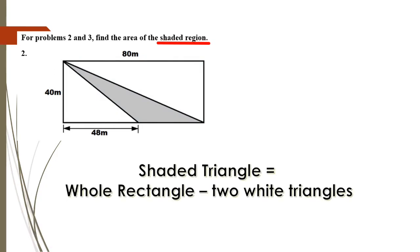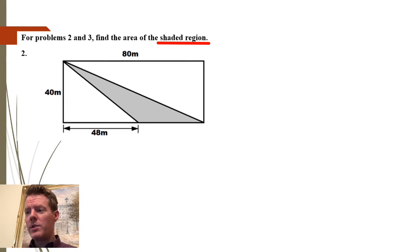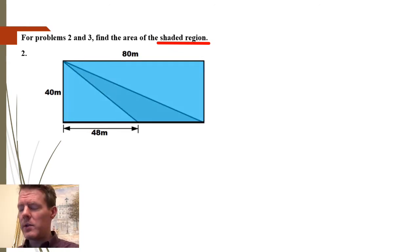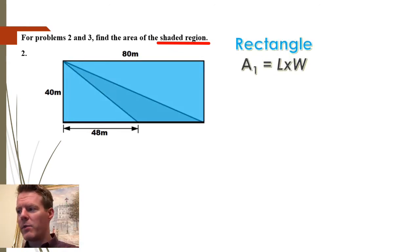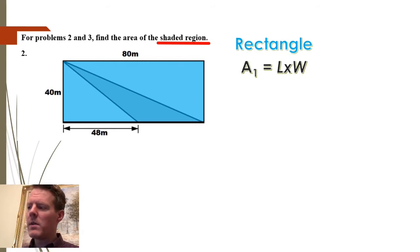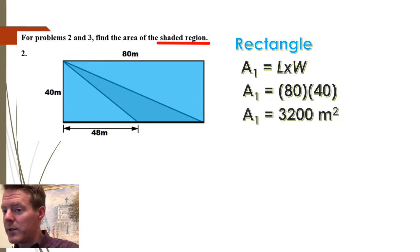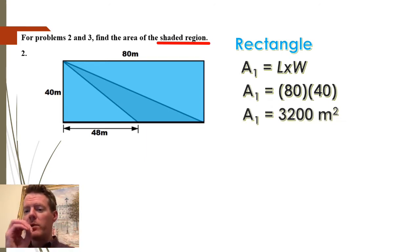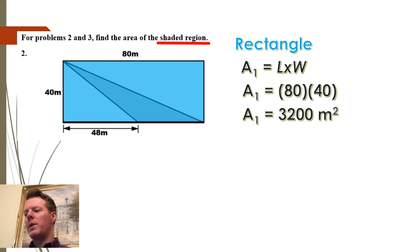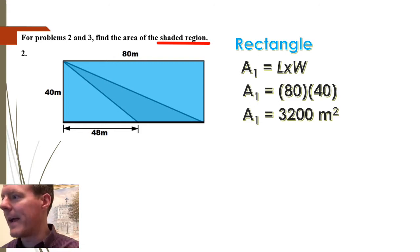The shaded triangle equals the whole rectangle minus the two white triangles. So first I'll find the area of the rectangle. The rectangle formula is length times width — that's 80 by 40, which is 3200, not 320. Some people make that mistake when multiplying two numbers that end in zero. So my area of the rectangle is 3200.